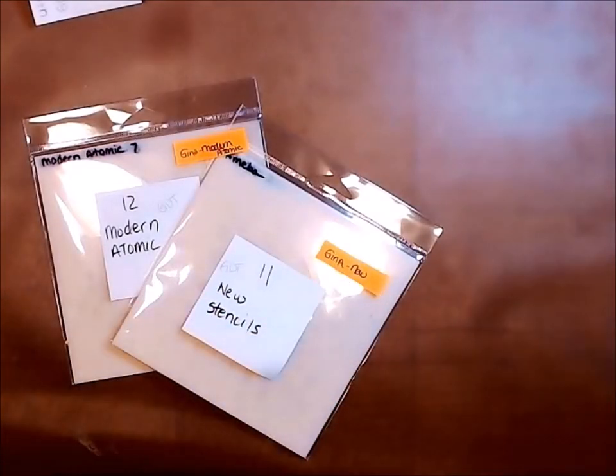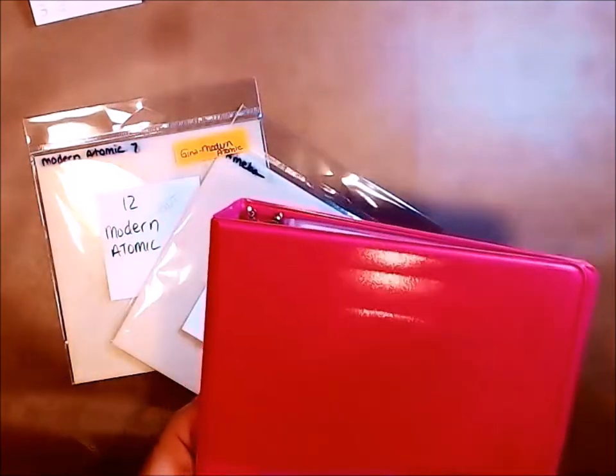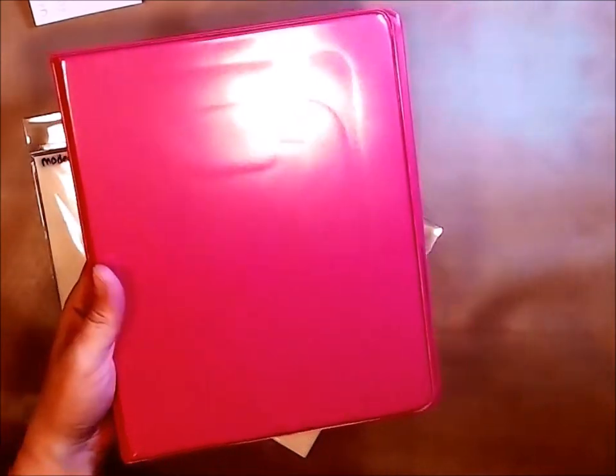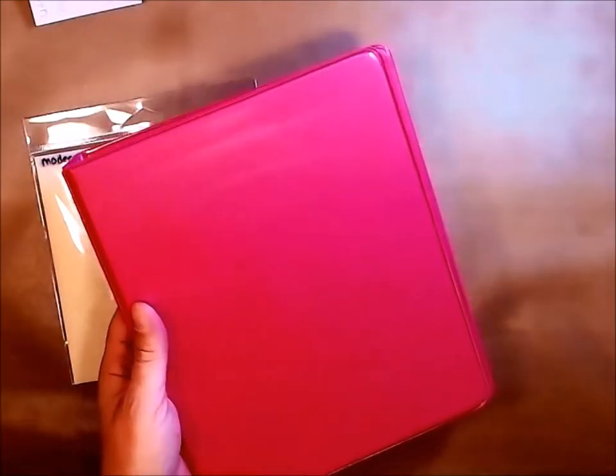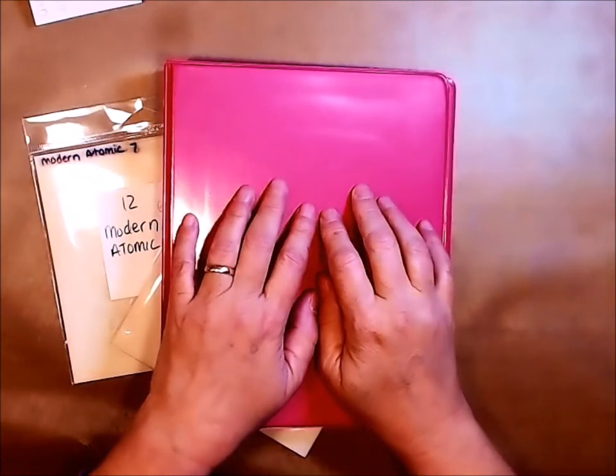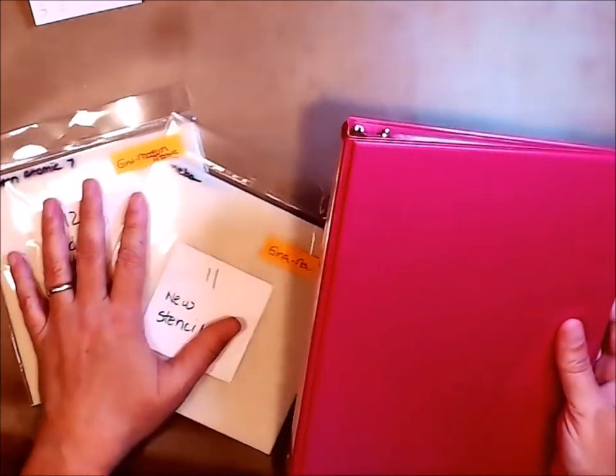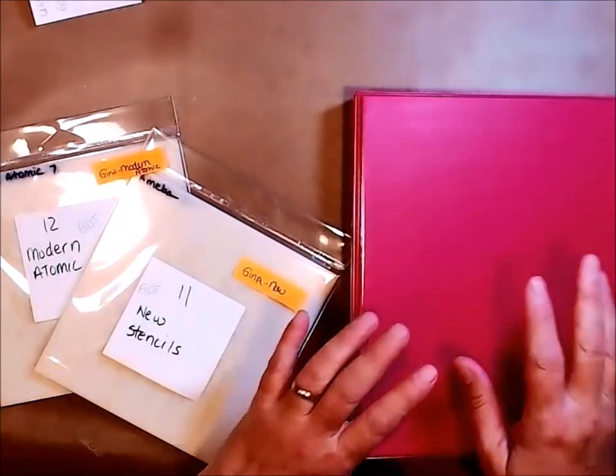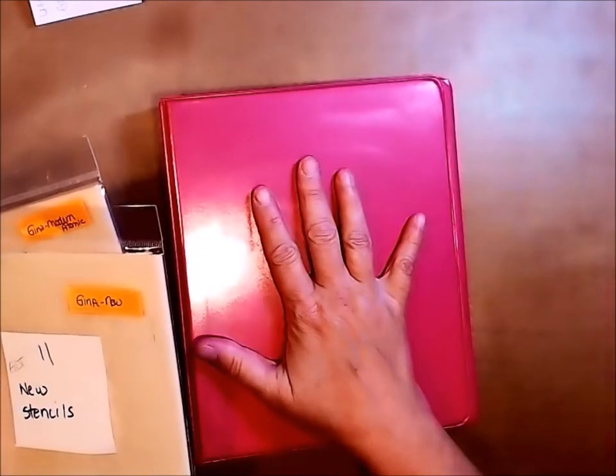So what I did is I went and purchased some of these binders. They're a little bit bigger than this size. As you can see they're bigger and they're not as wide. I used to keep Gina's stamps in these, but what I'm gonna do is adapt a new way of organizing so they will go in here.